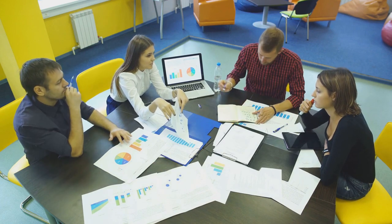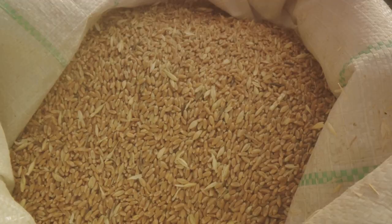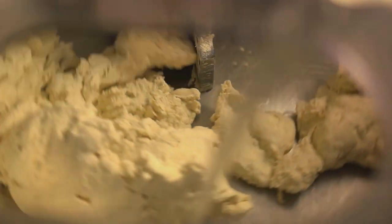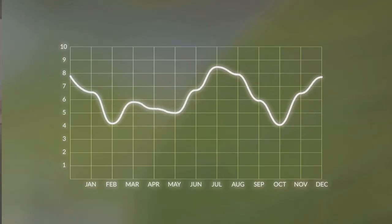But what happens when other factors aren't equal? What if the cost of flour, your main ingredient, shoots up? Or what if a new bread-making machine comes out that doubles your baking speed? These are the kinds of factors that can shift the supply curve.